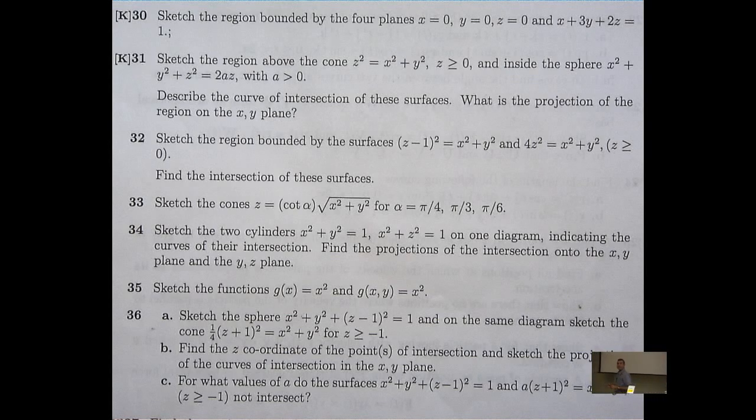In problem 31, we are asked to sketch the region that lies above the cone z squared equals x squared plus y squared, where z is non-negative, and inside the sphere x squared plus y squared plus z squared equals 2az, where a is a positive constant.